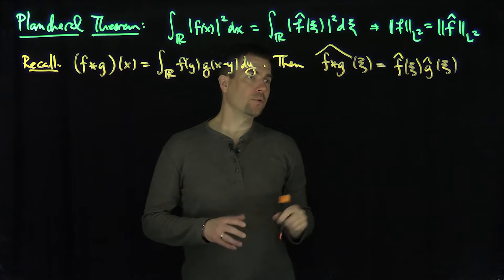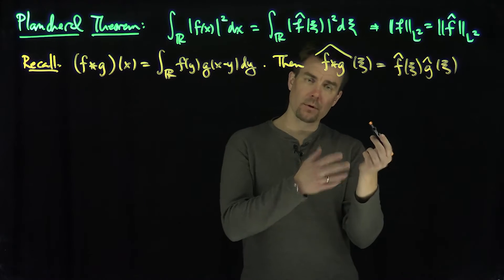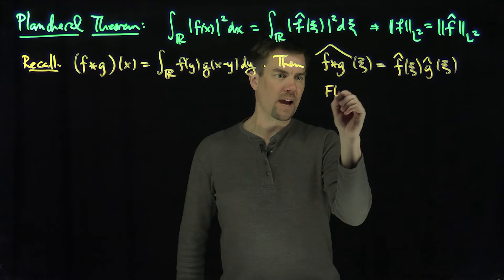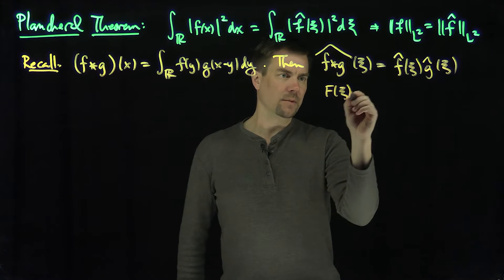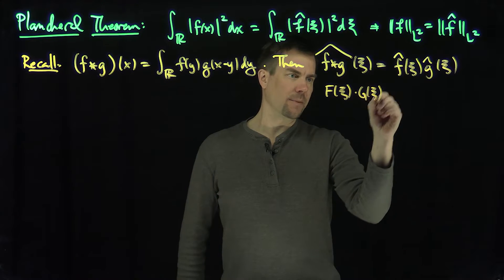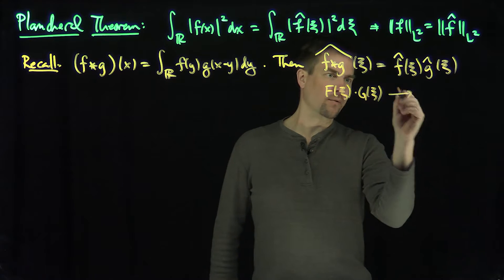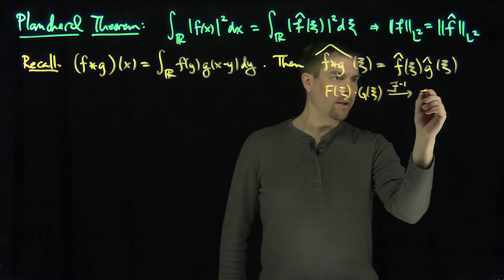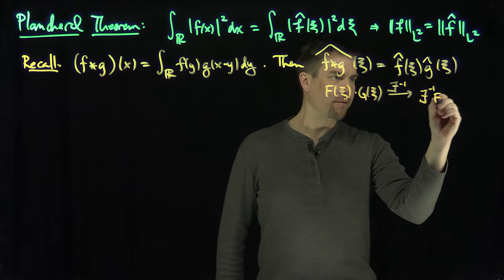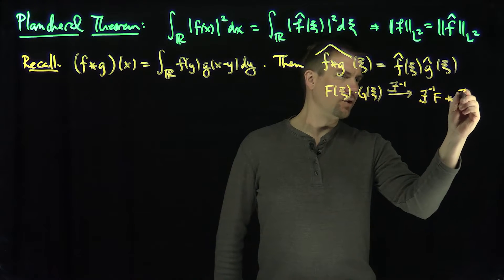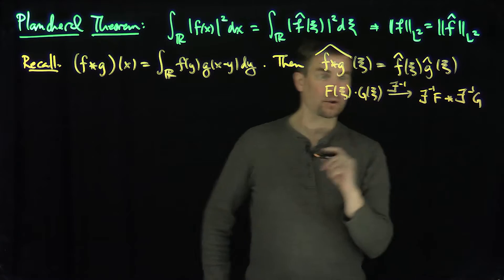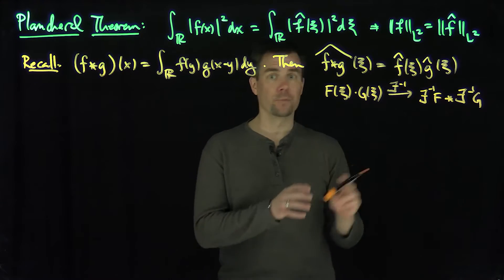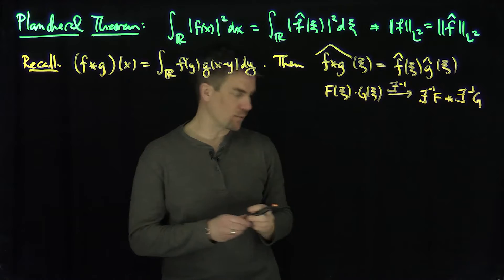Likewise, if you want to do the inverse Fourier transform, you have to do the convolution. In other words, if I have two functions F(ξ) times G(ξ), then the inverse Fourier transform of this is going to be the inverse Fourier transform of F convolved with the inverse Fourier transform of G. That's how convolution works with multiplication in the Fourier transform.